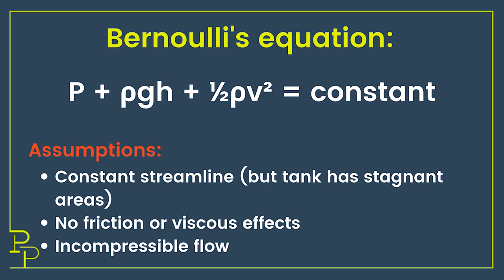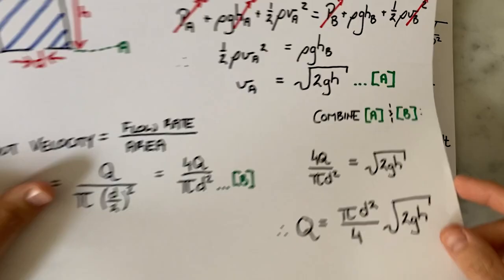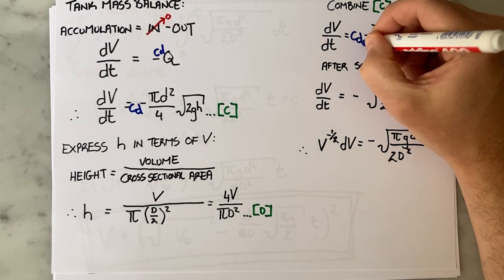So what do engineers do when the maths doesn't work? That's right baby, we slap a factor in front of the equation to make it work. In this instance we're going to give it the very official sounding name of a discharge coefficient and define it as the ratio of actual to theoretical flow. In other words, we're just forcing this thing to work. And I go back to all my maths earlier, and every time I have a flow rate I put a discharge coefficient in front of that term.